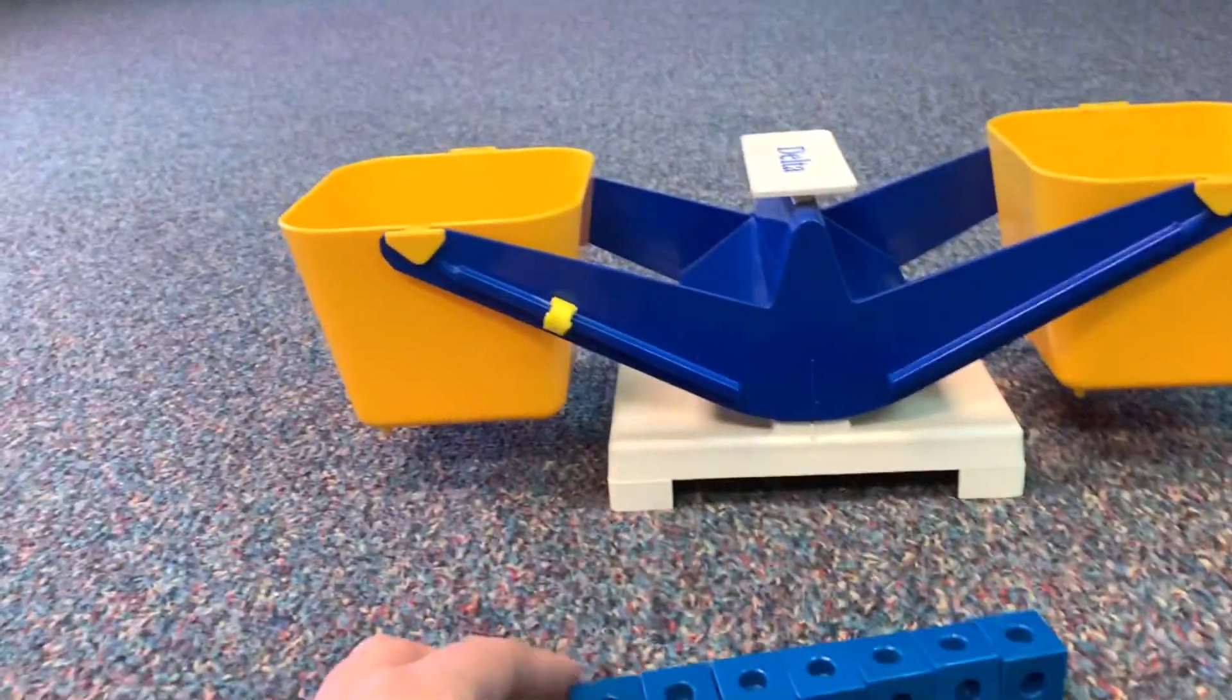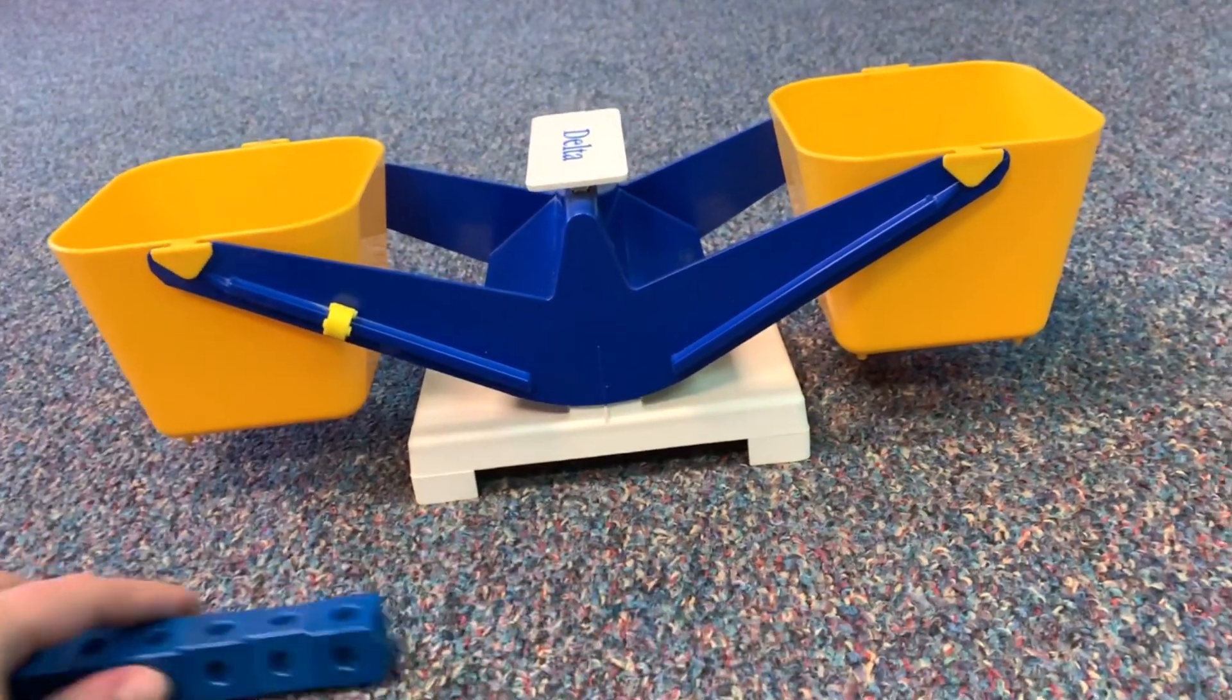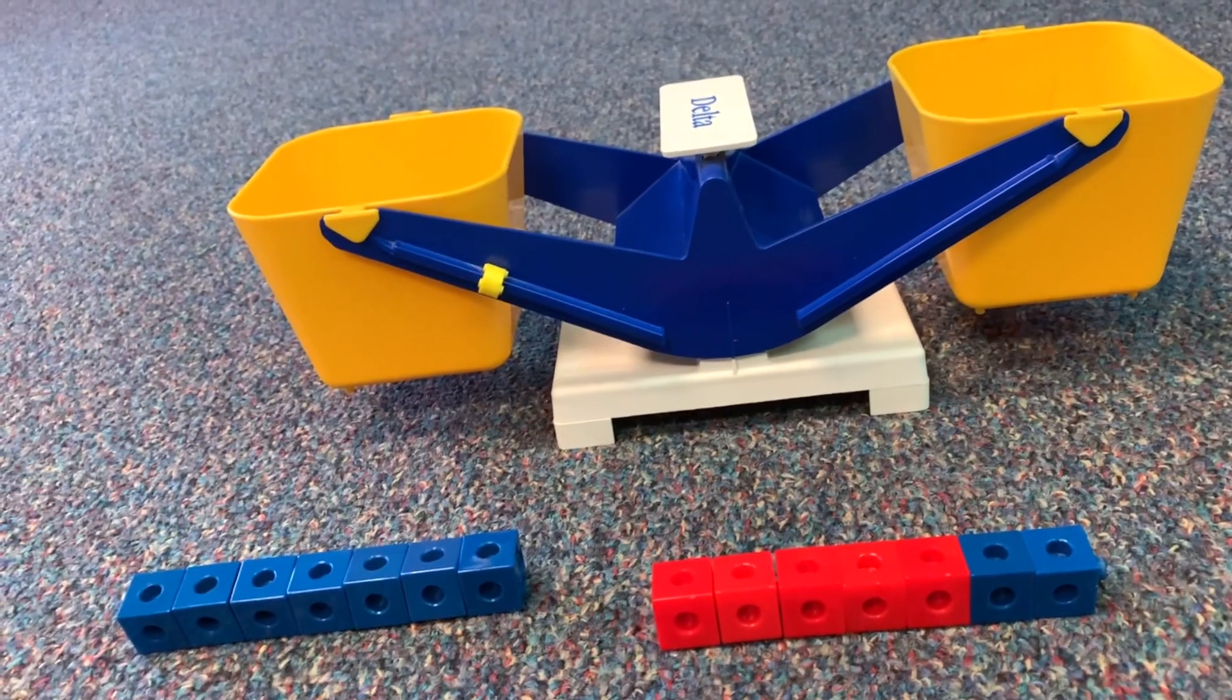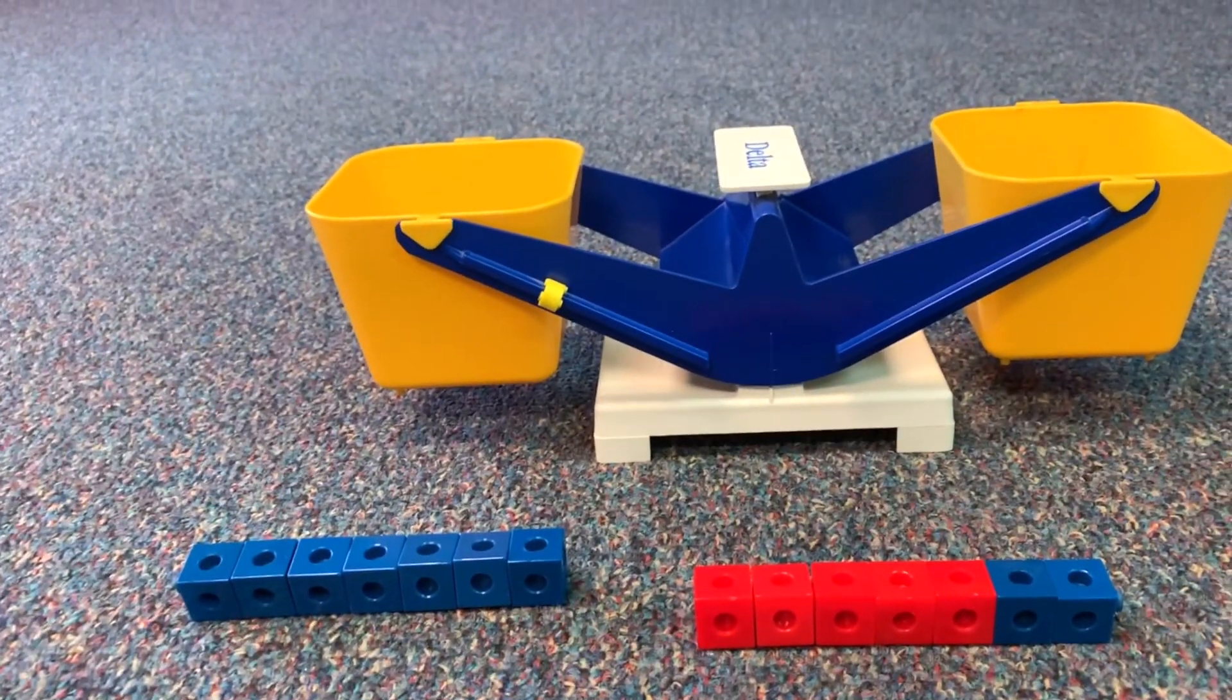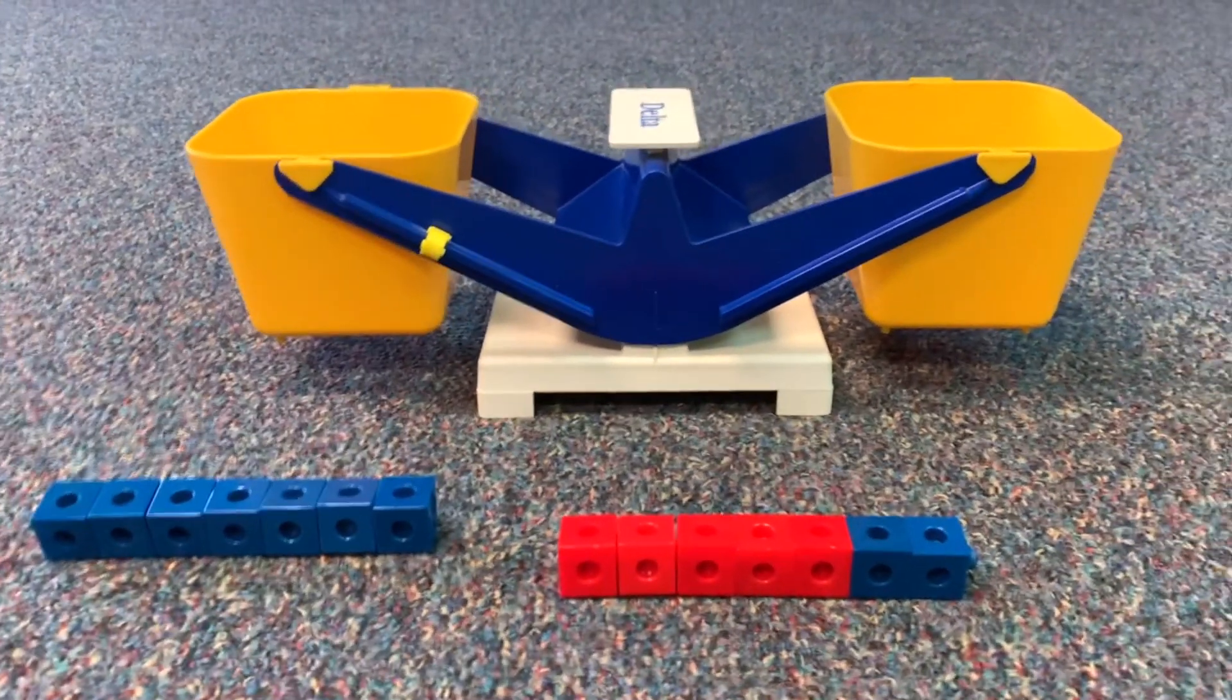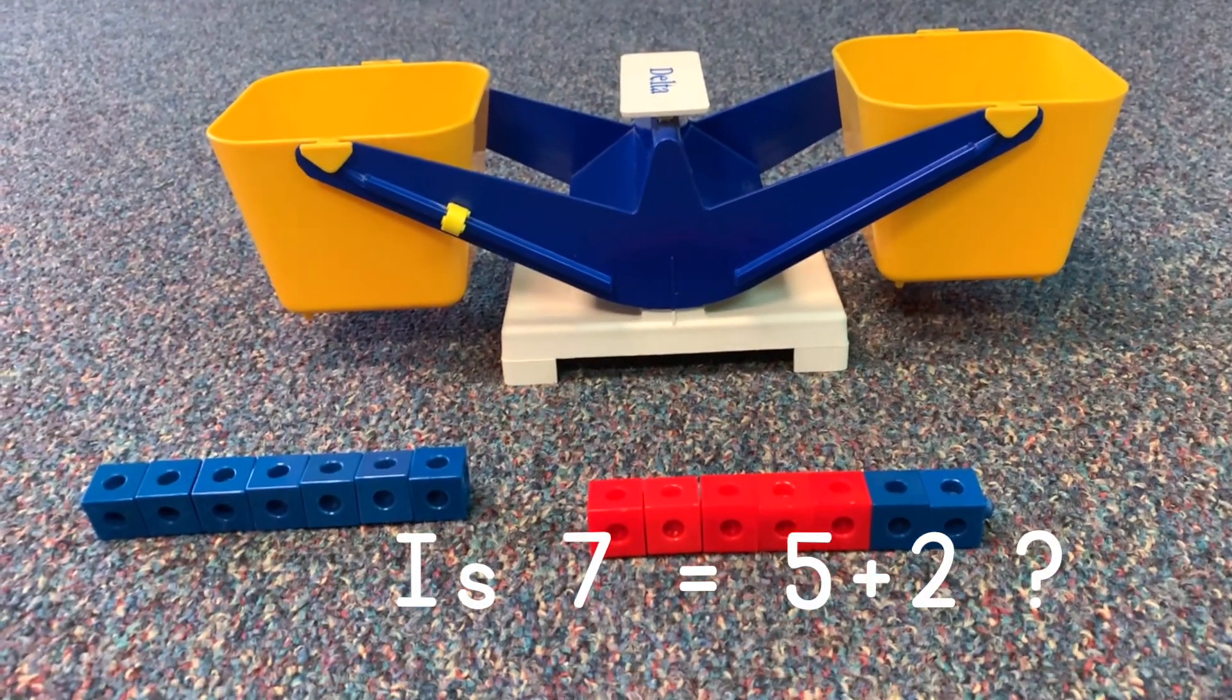Here I have seven blue cubes. And here I have five red and two blue. They're not the same. One has seven blue, one has two blue and five red. But are they equal? Is seven equal to five plus two?